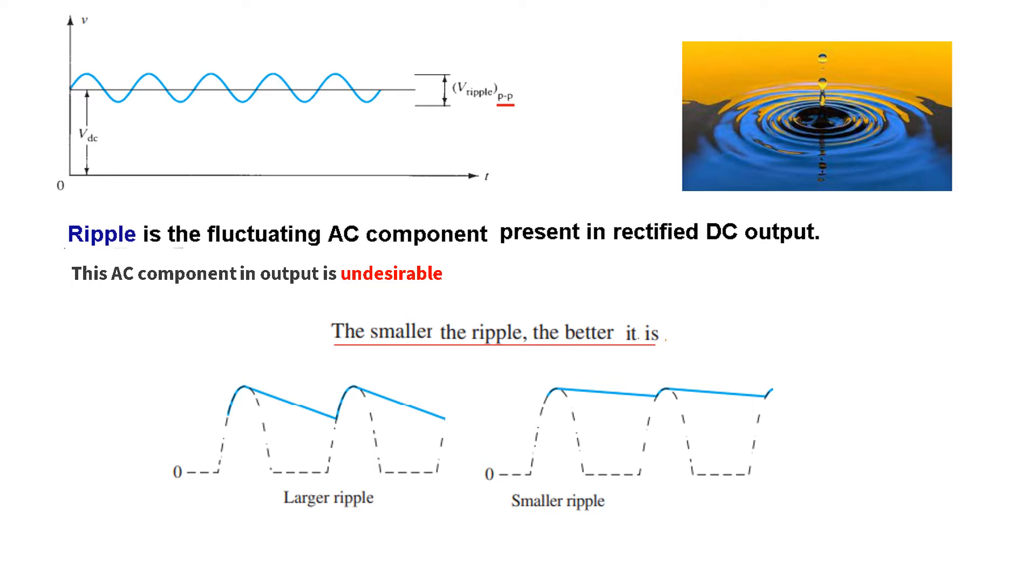Now let's just take one example. First of all we will talk about ripple. Ripple, and if you see if you throw a stone in the pond, these are this shape you can see. This is called ripple. So the rectified output will also have ripples generally of this form. Now what is a ripple? It is a fluctuating AC component present in the rectified DC output.